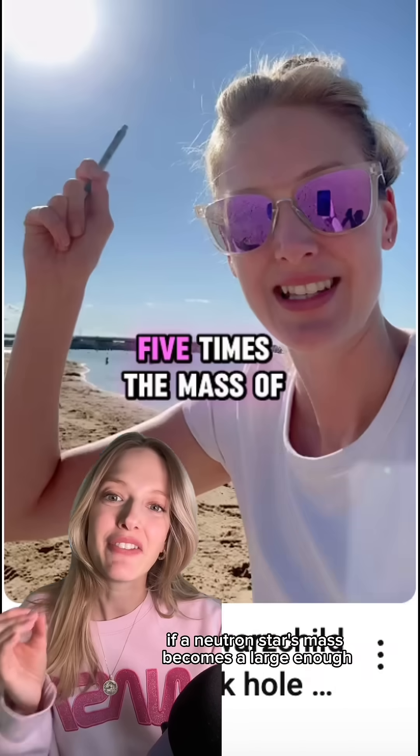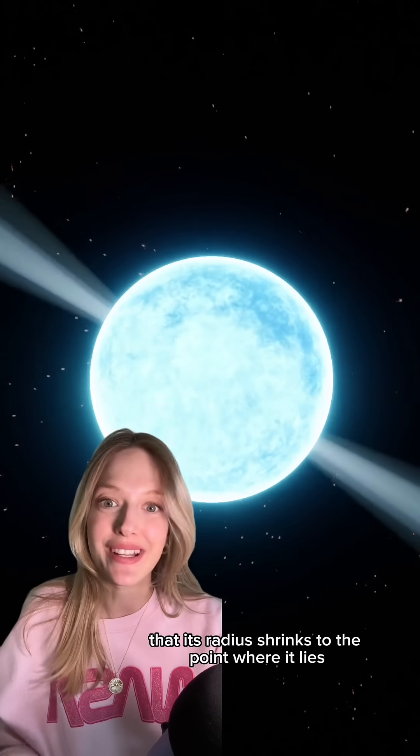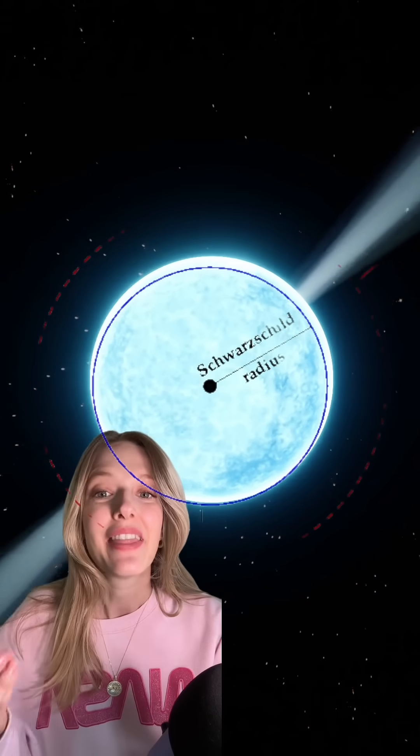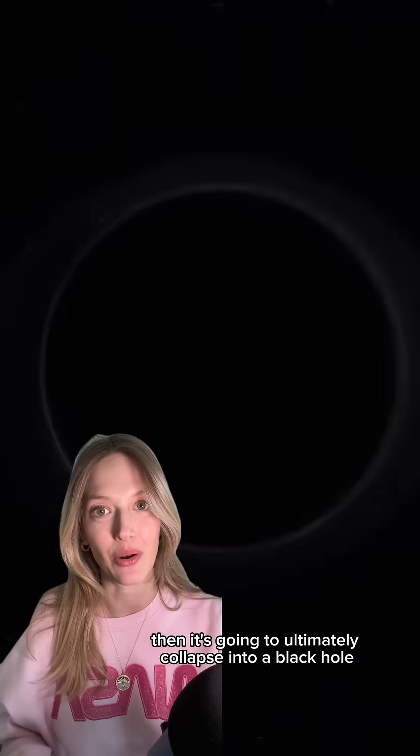I've done a video on this before. If a neutron star's mass becomes large enough that its radius shrinks to the point where it lies within the Schwarzschild radius, then it's going to ultimately collapse into a black hole.